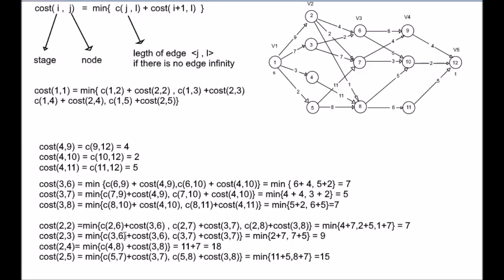A quick clarification. Here, C(3,6) is a value of edge from node 3 to node 6, whereas cost(3,6) is a path value of 3rd stage, 6th vertex, that is the path from 6 to 12. Now let us substitute these values in cost(1,1), which is equal to minimum of C(1,2) which is 9 plus cost(2,2) which is 7, comma, C(1,3) which is 7 plus cost(2,3) 9, comma, C(1,4) 3, comma, cost(2,4) 18, comma.